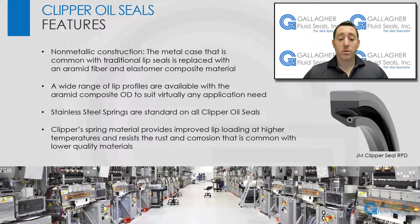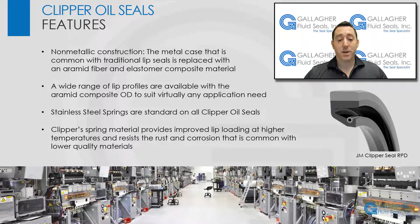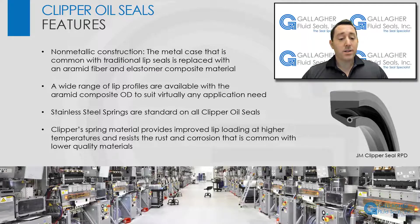So what are Parker Clipper oil seals commonly made from? The most unique feature of the Clipper oil seal is non-metallic construction. The metal case that is common with traditional lip seals is replaced with an aramid fiber and elastomer composite material. In worn housings, the composite outer surface can assist in preventing leak paths that would exist in a press-fit metal can installation. When replacing seals in used equipment, an investment in a Clipper seal can prevent a lot of unwanted maintenance down the road. A wide range of lip profiles are available with the aramid composite OD to suit virtually any application need. Stainless steel springs are standard on all Clipper oil seals where the industry standard is a lower quality carbon steel. Clipper's spring material provides improved lip loading at higher temperatures and resists the rust and corrosion that is common with lower quality materials.